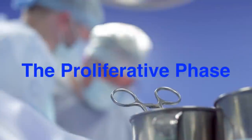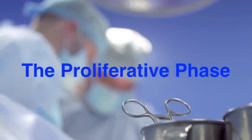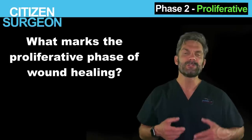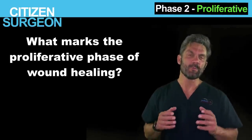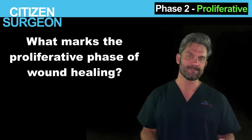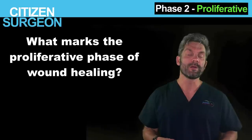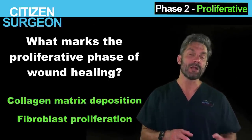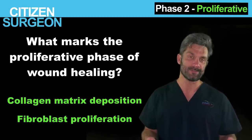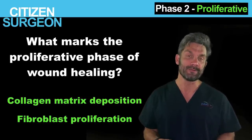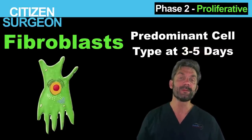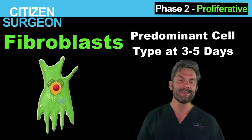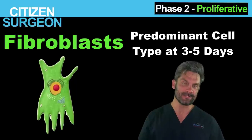Next is transitioning from the inflammatory phase to the proliferative phase. The marker of the proliferative phase is collagen deposition and formation of the collagen matrix, as well as fibroblast proliferation. The fibroblast becomes the predominant cell type between days three and five, and its function is to lay down collagen and heal the wound.